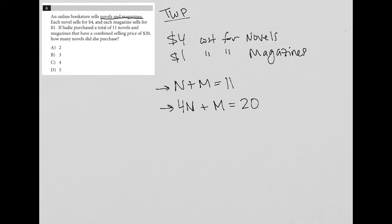How many novels did she purchase? Well, in essence, what this question has just provided for us is a system of equations. Whenever we have a system of equations, which shows up quite frequently on the SAT, we have two options: either solve by elimination or by substitution.